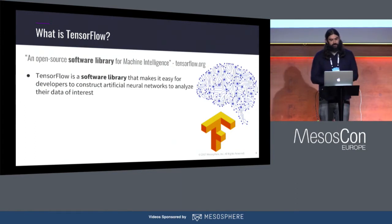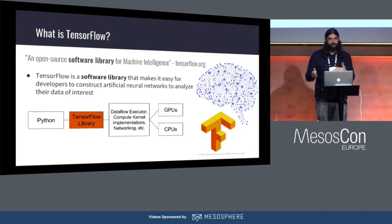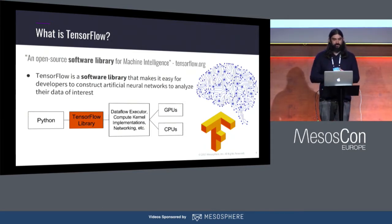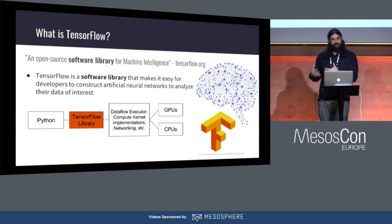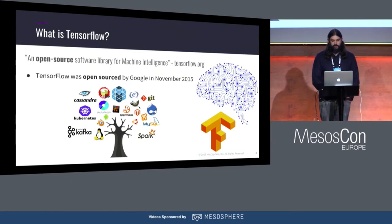TensorFlow is a software library that makes it easy for developers to construct artificial neural networks to analyze their data of interest. You can import this TensorFlow library into a Python application, and it takes care of all the low-level details: how to execute a dataflow graph, what compute kernels to use, how to handle networking for distributed jobs across machines, and how to schedule jobs on the right hardware — whether GPUs, CPUs, or even TPUs. It was open sourced by Google back in November 2015.